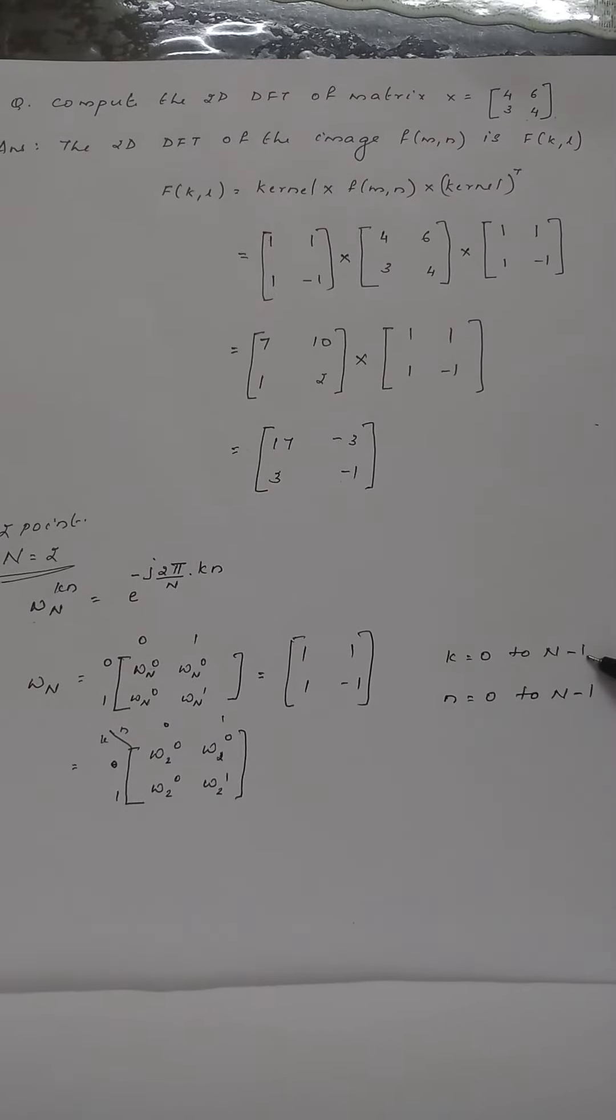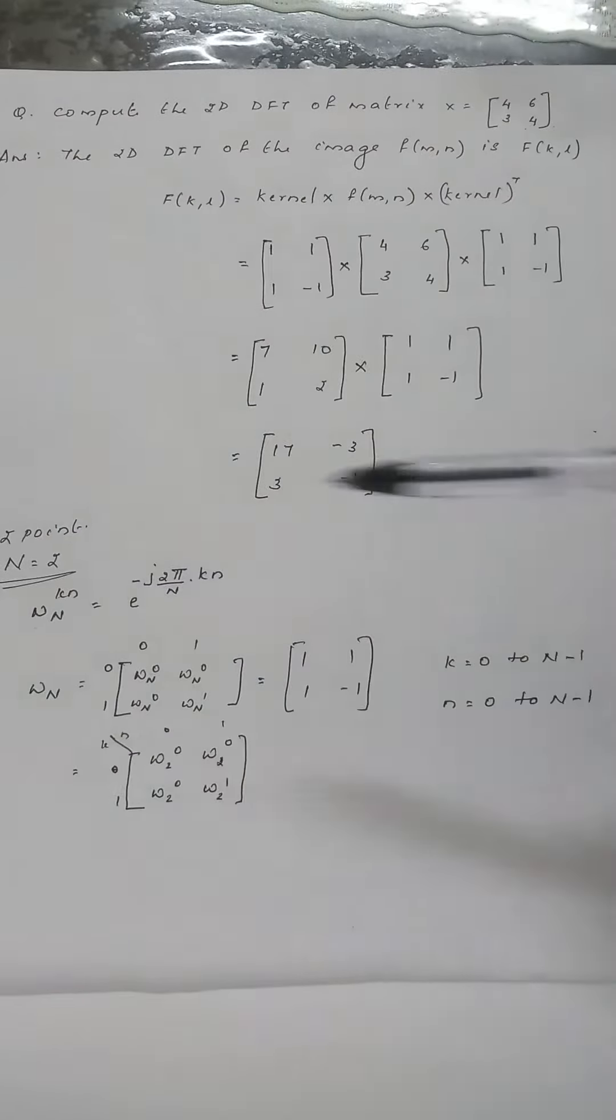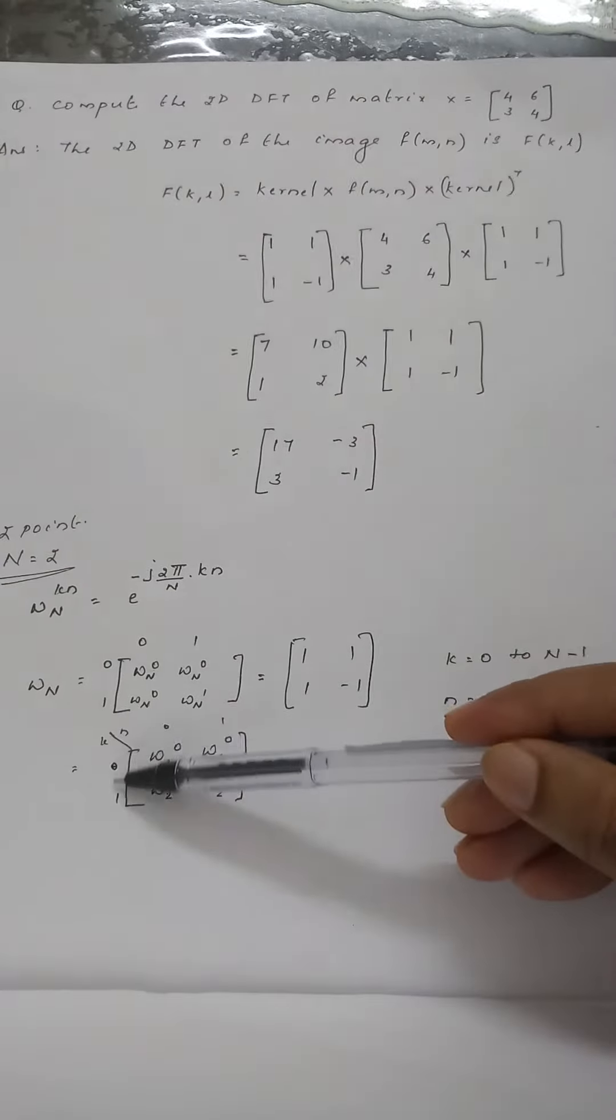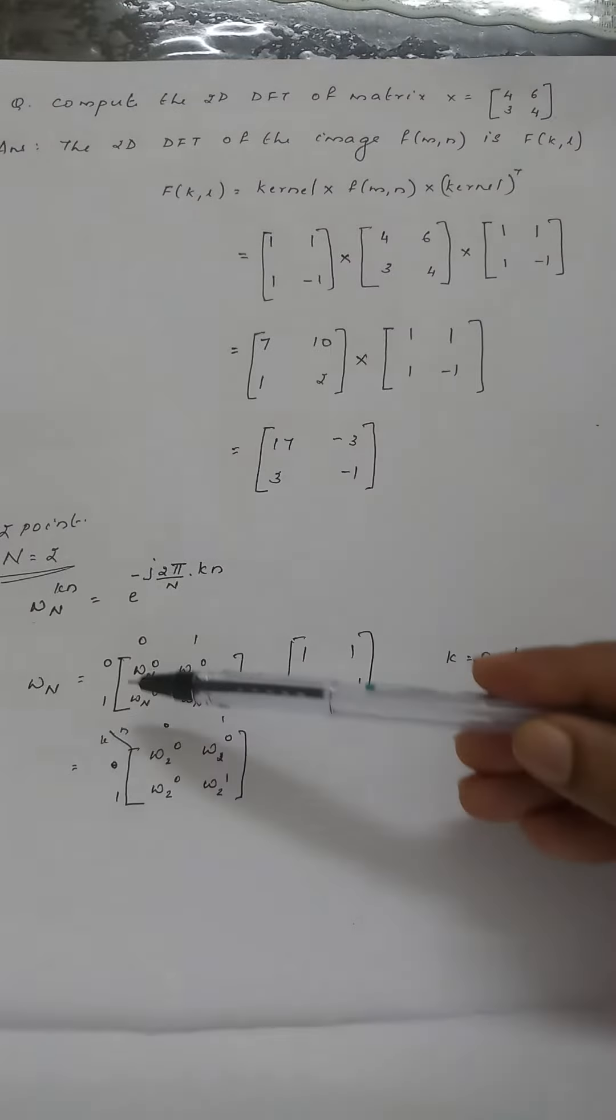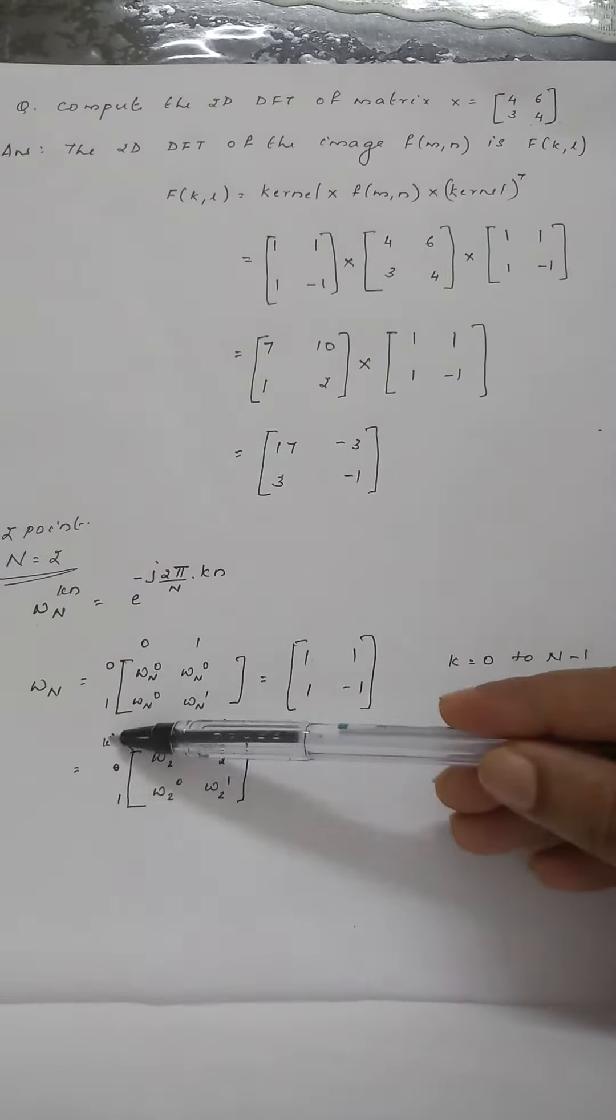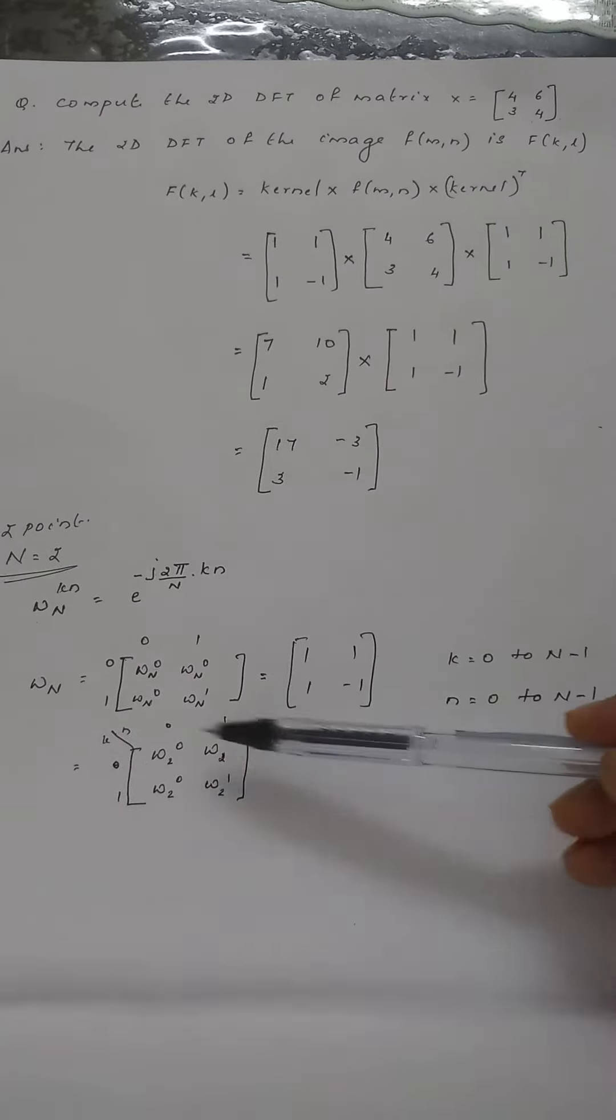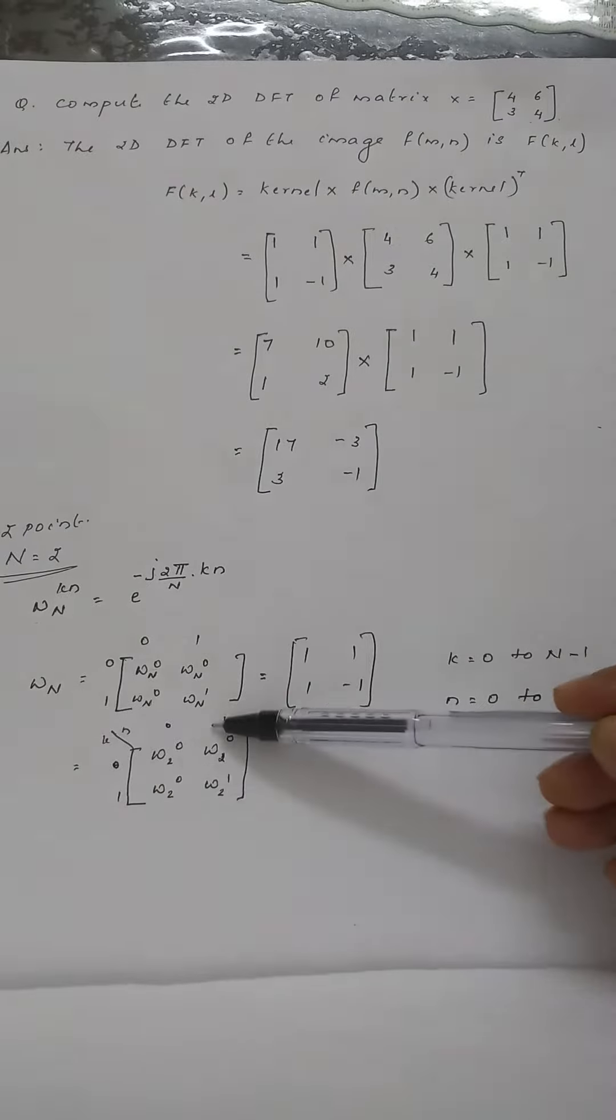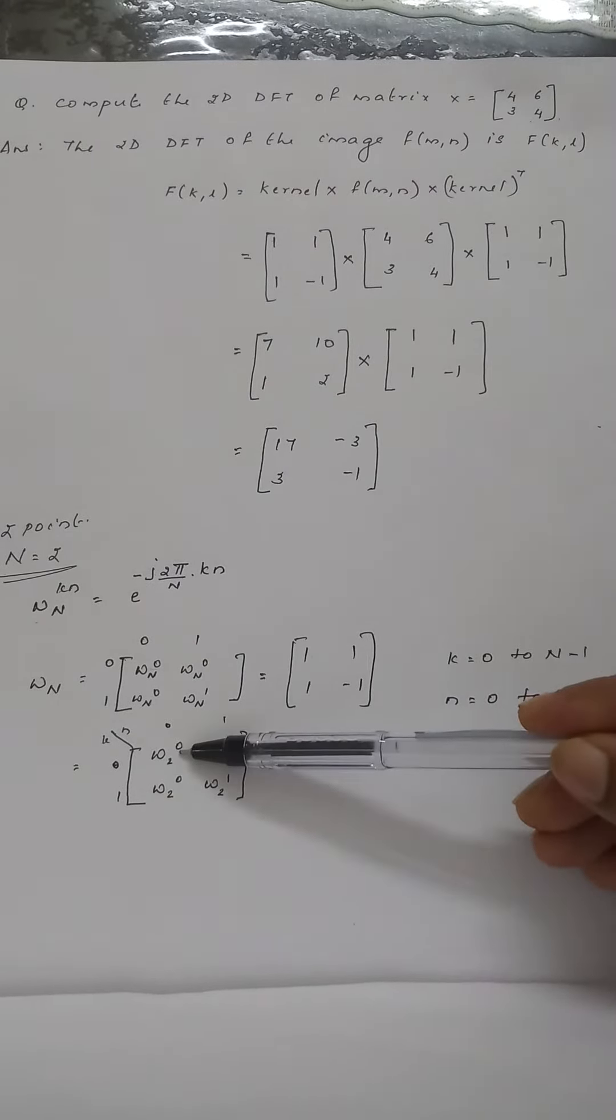k varies from 0 to n minus 1, where n equals 2, so k varies from 0 to 1. n also varies from 0 to n minus 1, which is 0 and 1. So we have omega_2 raised to: 0×0, 0×1, 1×0, 1×1. We get this two-dimensional matrix.